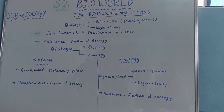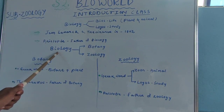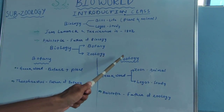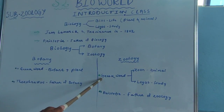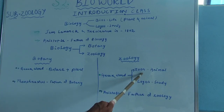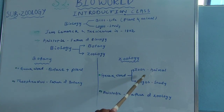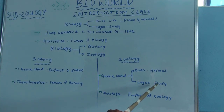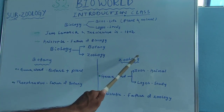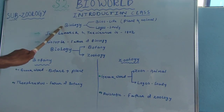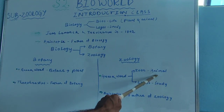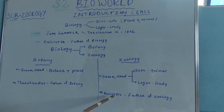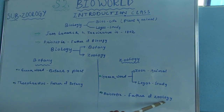Another branch of biology is zoology. The term zoology was derived from two Greek words — 'zoon' and 'logos'. Zoon means animal and logos means study. So zoology is the branch of biology which deals with the study of animals. Aristotle was regarded as the father of zoology.